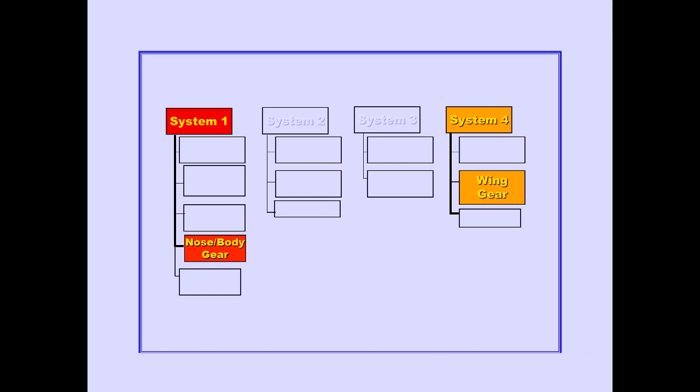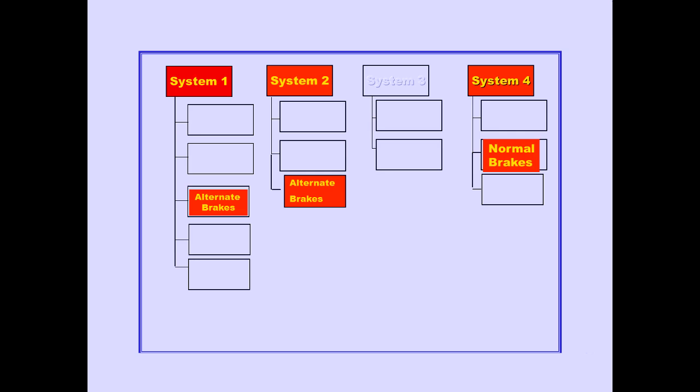Systems 1 and 4 power the landing gear. System 1 powers the nose and body gear. System 4 powers the wing gear. Systems 1, 2, and 4 power the brakes. Systems 1 and 2 power the alternate brakes. System 4 powers the normal brakes. Finally, system 1 powers the nose and body gear steering.